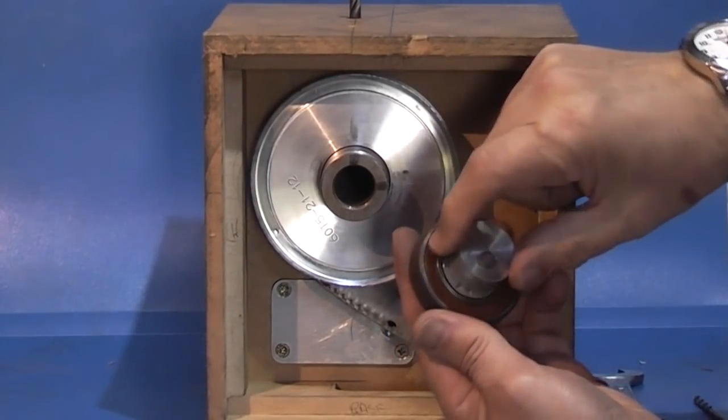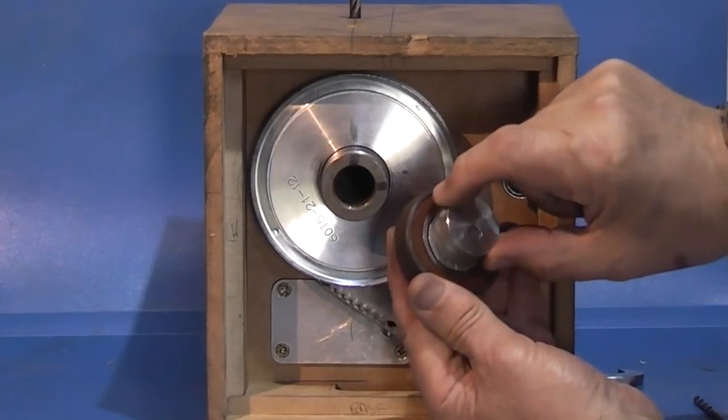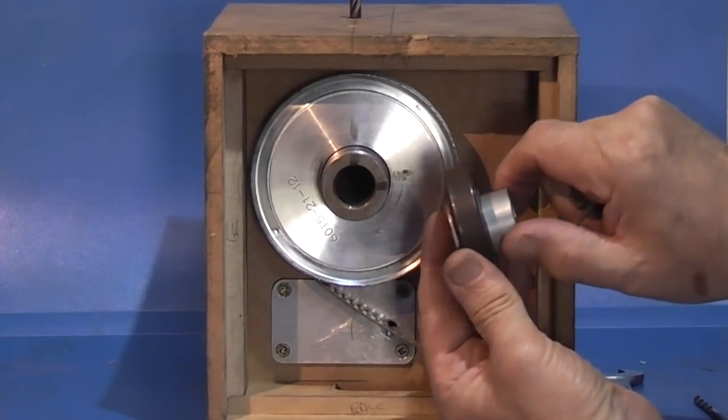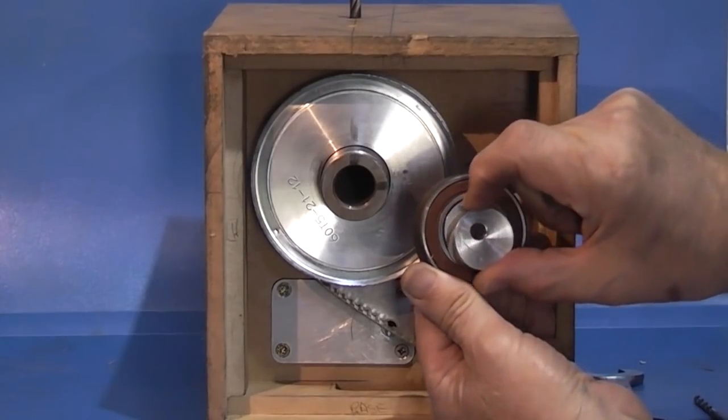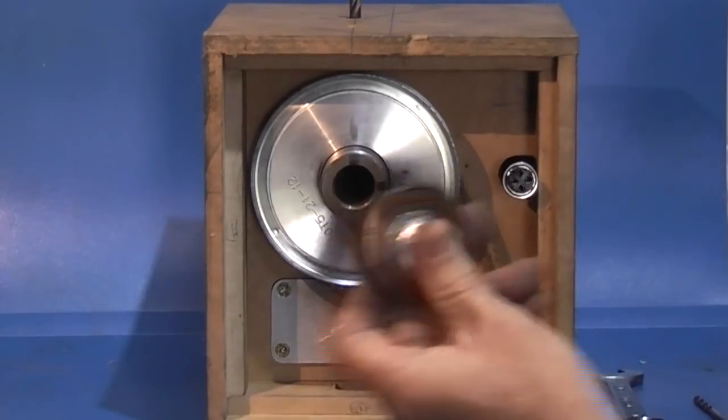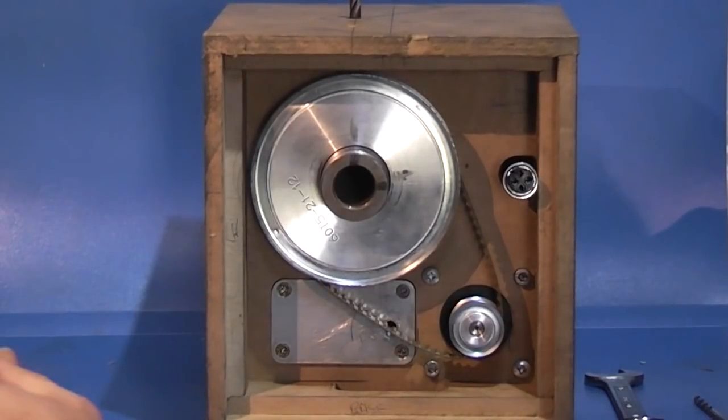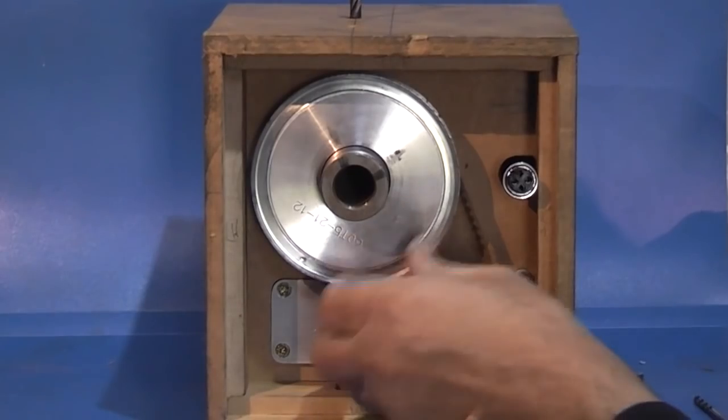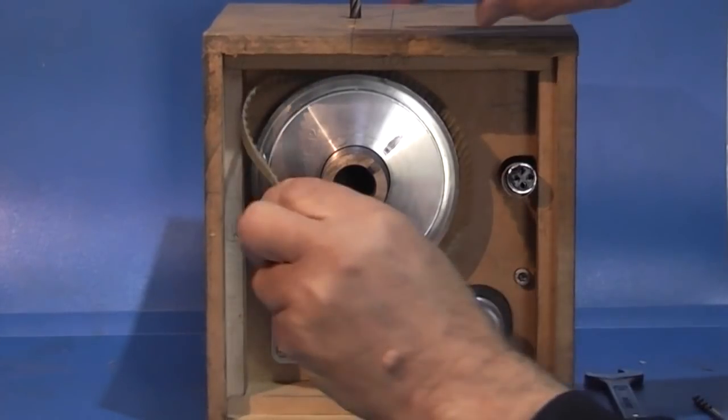In fact I can take this out completely. This is just a bearing with an offset hole so as you turn this round it pulls the bearing in and out, it tightens the belt up. That's the belt.